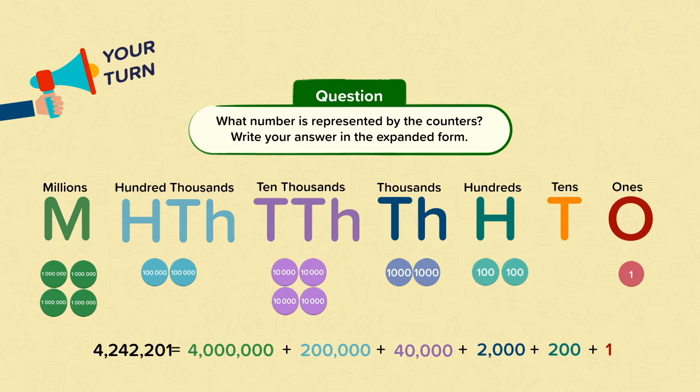The question asks you to write your answer in the expanded form. You should have written 4,242,201 equals 4,000,000 add 200,000, add 40,000, add 2,000, add 200, add 1. Multiply the value of the counter by the number of counters to get the value for that place. For example, the value of the digit in the 10,000 place is 10,000 times 4 equals 40,000. Note that there is nothing in the tens place, so this is represented by a zero in the number and is not written at all in the expanded form.